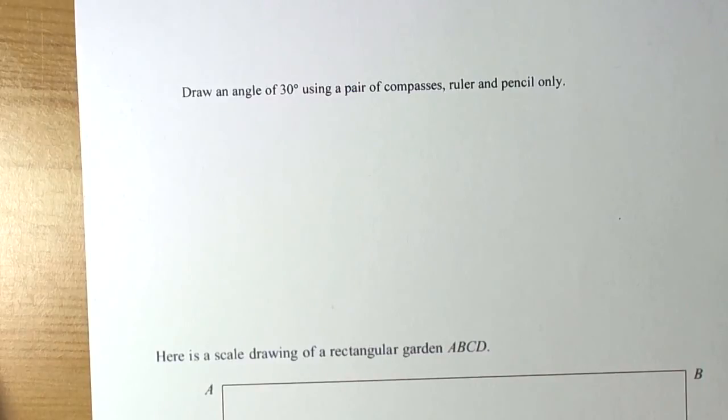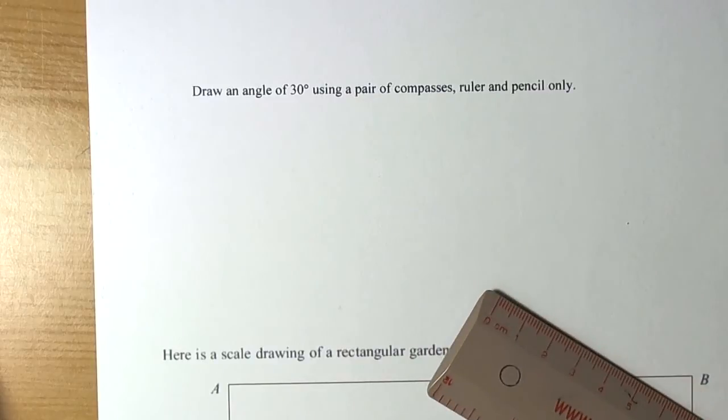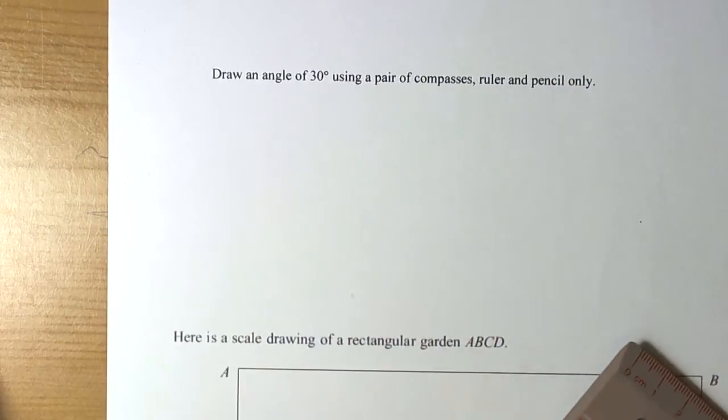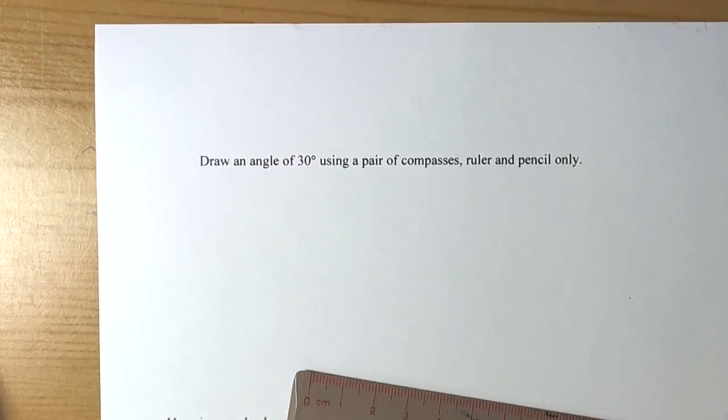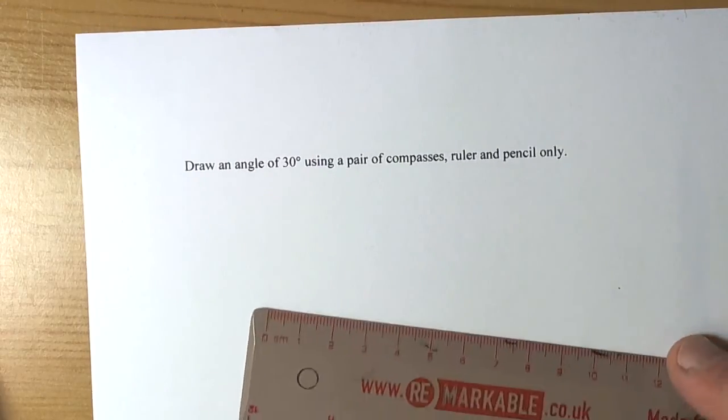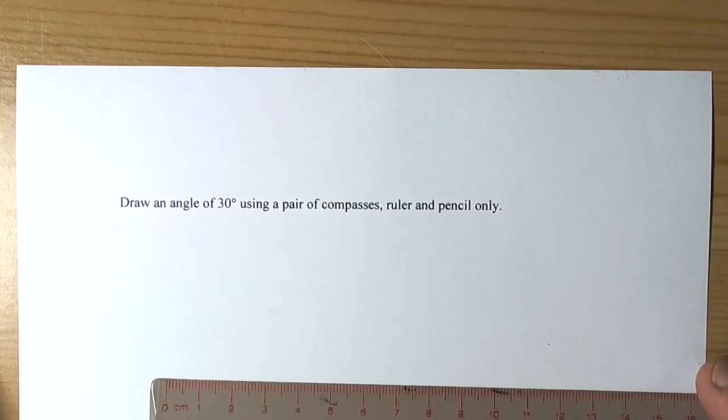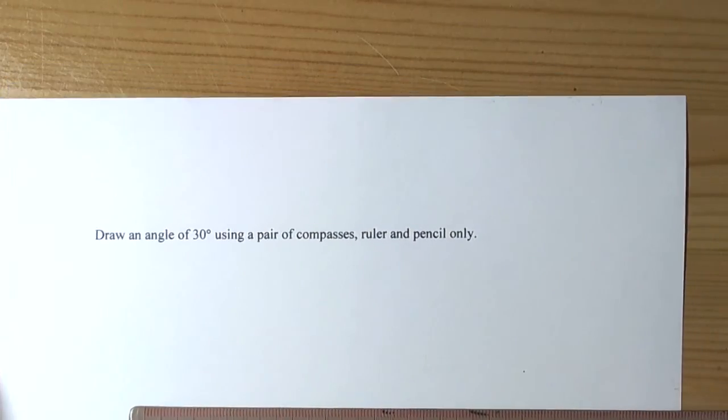Drawing loci, path of objects, drawing things accurately - just a quick reminder of a couple of key ideas. We might have been asked, for example, to draw an angle of 30 degrees using a pair of compasses, ruler and pencil only. They're kind of shouting out here, don't try and use a protractor.